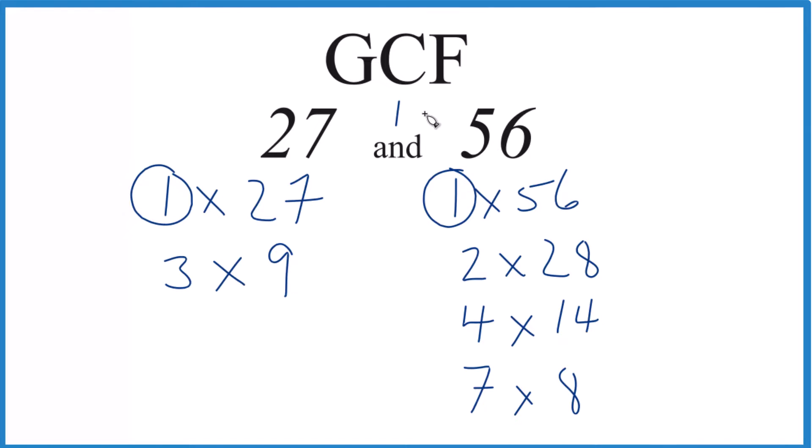There are other ways you can do this, like prime factorization, but for numbers that aren't really big, like 27 and 56, this is a pretty good way to do it.